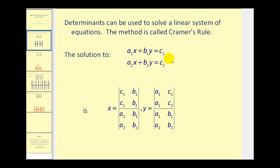So if the system is set up this way, x is equal to this quotient and y is equal to this quotient. If we first take a look at the denominator of these quotients, the elements in the determinant are formed by the coefficients of the x and y terms. If we take a look at the numerator for the value of x, if we replace the x coefficients with the constants, we have the numerator for the value of x.